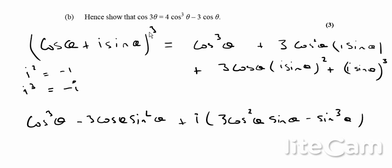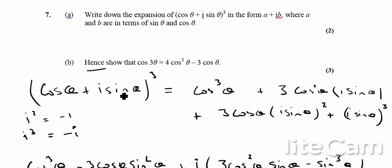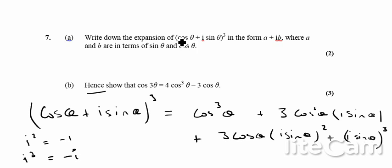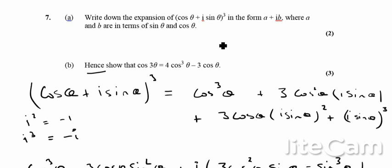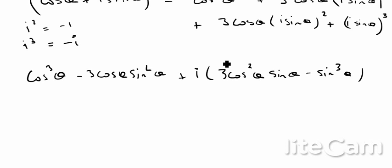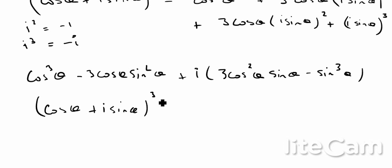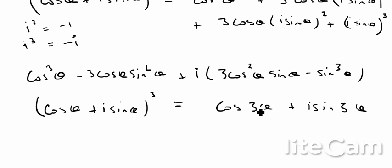The second part of the question says: hence show that cos3θ = 4cos³θ - 3cosθ. The trick is to look at (cosθ + i sinθ)³ and expand it in a different way using De Moivre's theorem. We know that (cosθ + i sinθ)³ = cos3θ + i sin3θ by De Moivre's theorem.